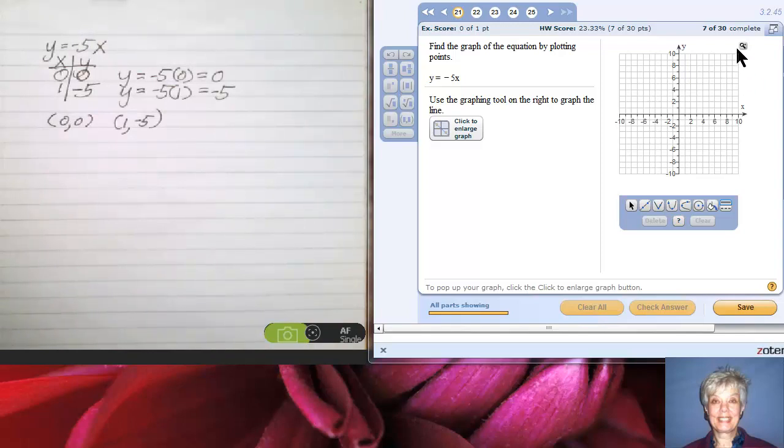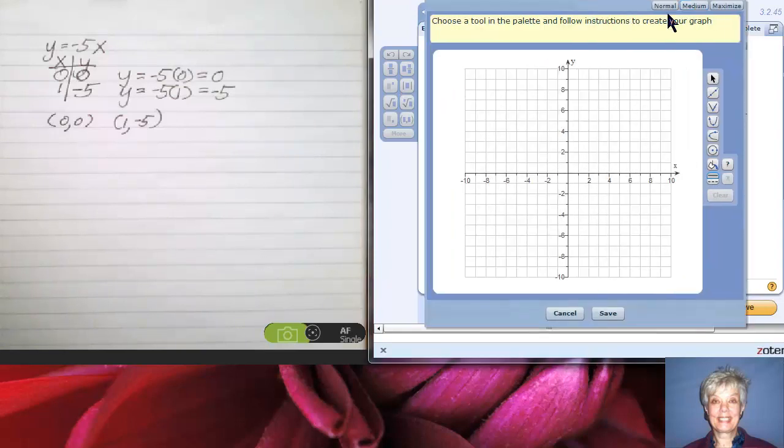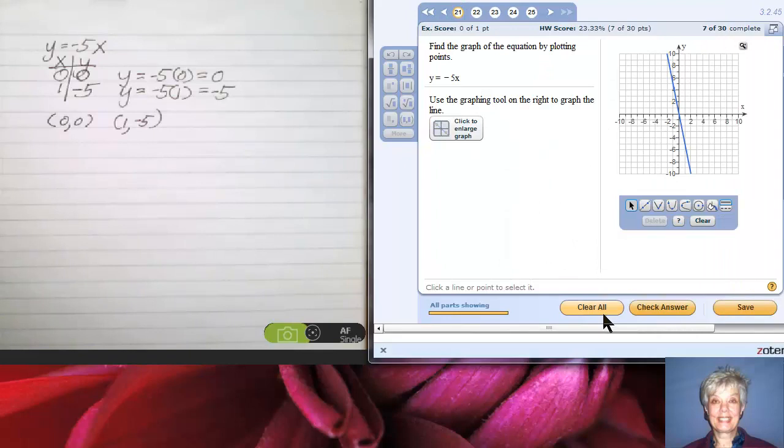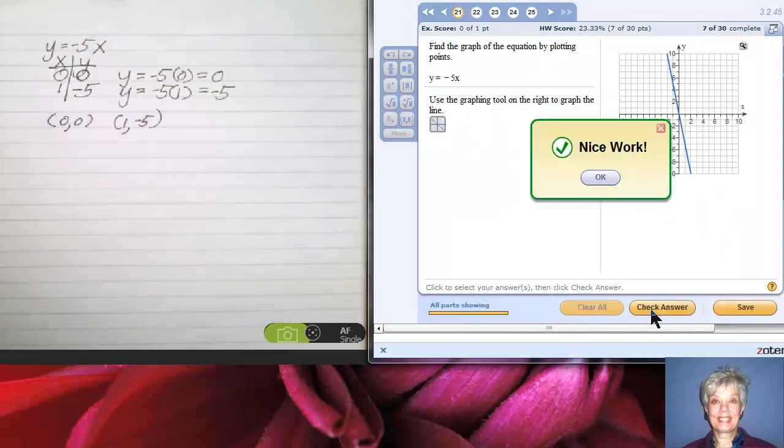I go to the magnifying glass, I click it. I go to medium. I go to the line tool. I go to (0, 0), which is this point right there in the middle. Now I go to the point (1, -5). This is admittedly difficult. There you go, click. Now I save, I check. Nice work. Let's move on.